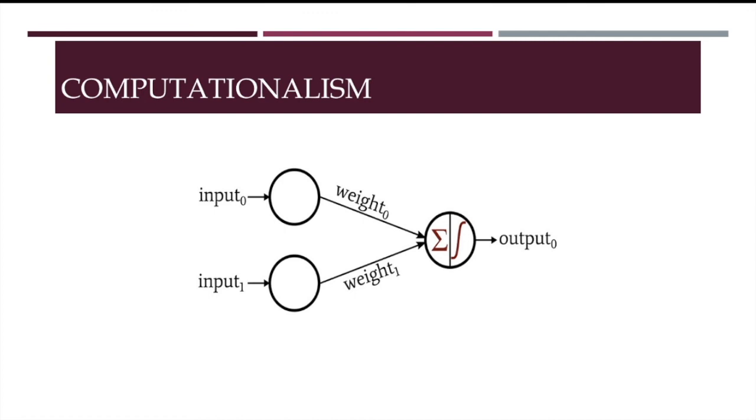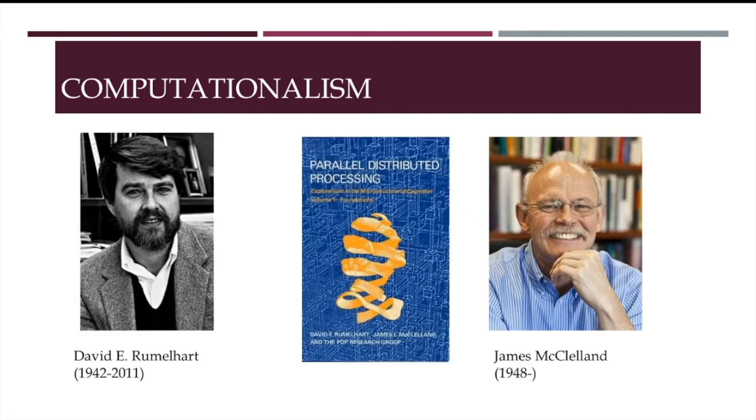For these and other reasons, research on neural networks stalled, until it saw a resurgence in the 70s and 80s, with the development of learning algorithms for multi-layer networks. And with the publication of the two volumes of the famous Parallel Distributed Processing by Rumelhart and McClelland, which coincided with the rise of the connectionist movement, which is at present healthy and vigorous.